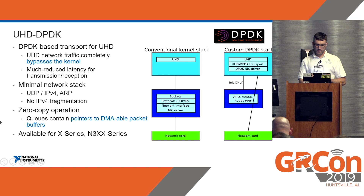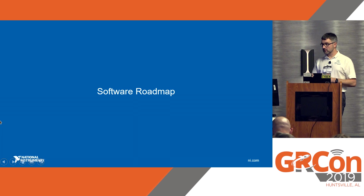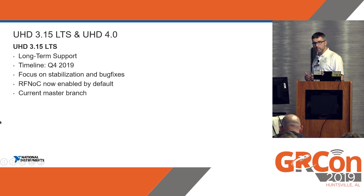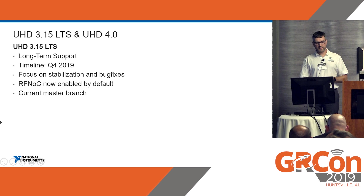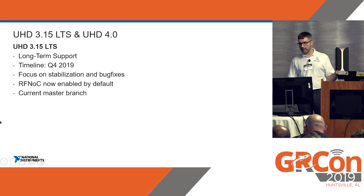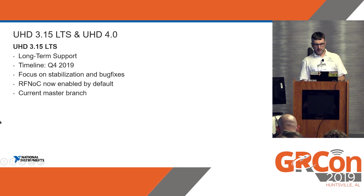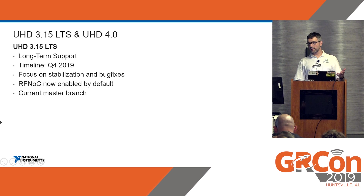There's also another talk on DPDK on Wednesday. On the software roadmap, there's a couple of things coming you might be interested in. UHD is the USRP hardware driver — the driver stack we use to drive our series. There's another release imminent later this year: 3.15, which will be an LTS branch like we had with 3.9, so this branch will be there for a while with ongoing bug fixes. One major thing is that RFNoC is now enabled by default, meaning if you install our binaries it will just come with RFNoC. You can look at our current master branch to get a good idea of what's coming in this release cycle.